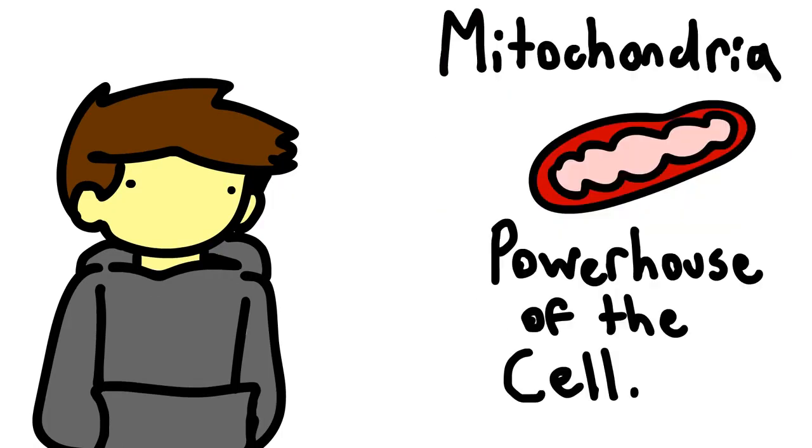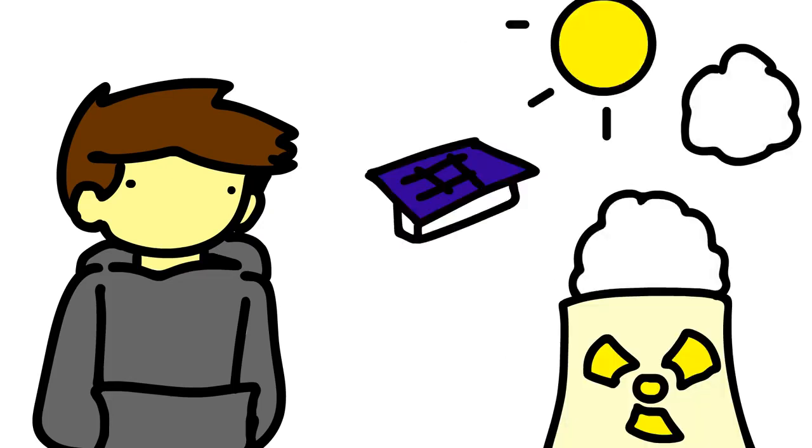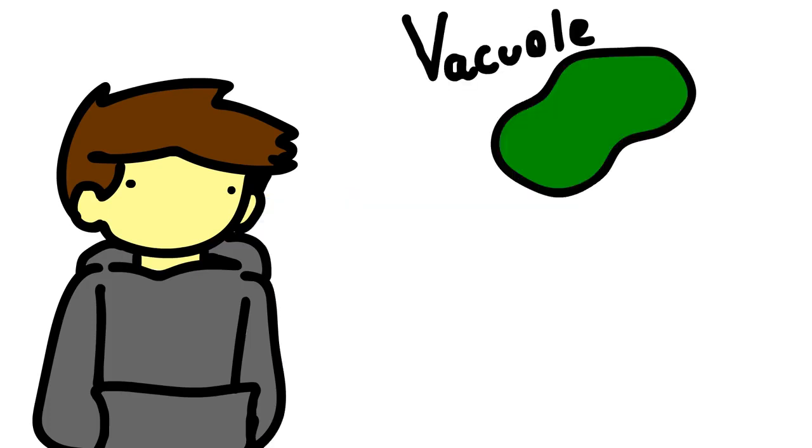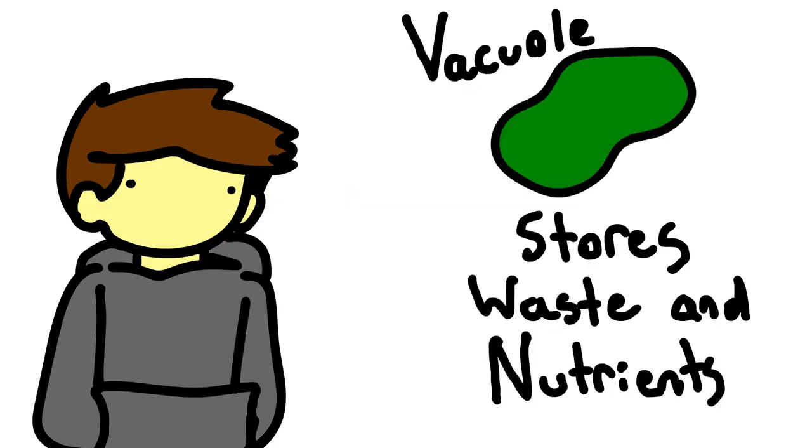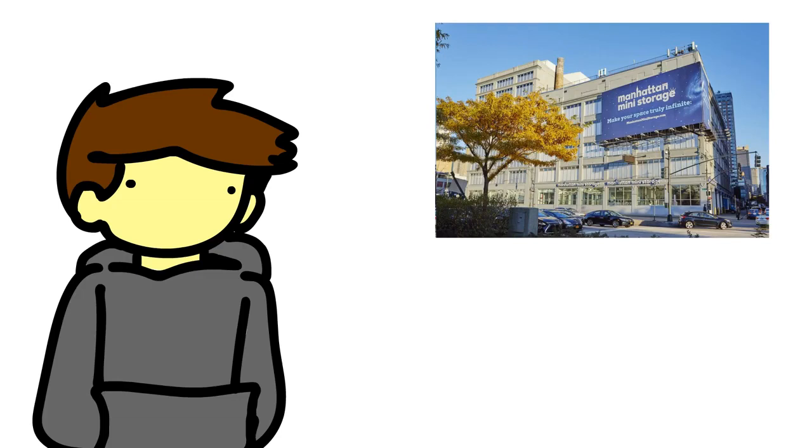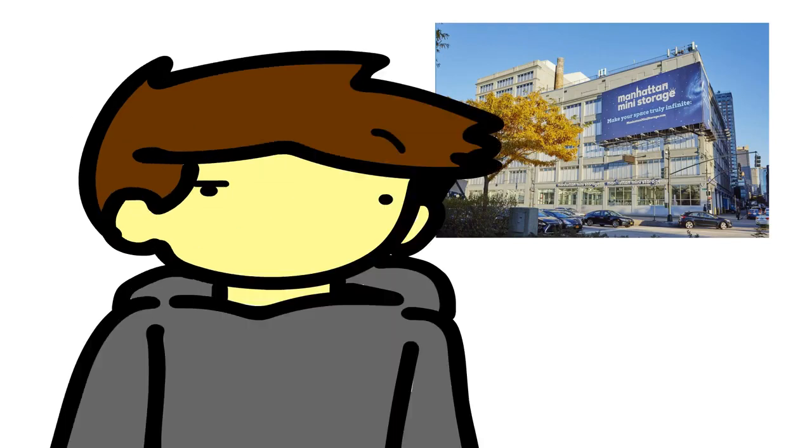Mitochondria provides energy for the cell. Think of the mitochondria as a power plant or a solar panel, collecting energy for New York City. The vacuole stores nutrients and waste from the cell, kinda like Manhattan storage, even though the vacuole actually has good storage.